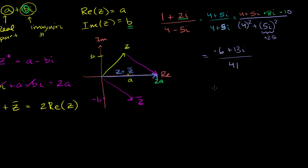So we can write this as a complex number. This is negative 6 over 41 plus 13 over 41i. We were able to divide these two complex numbers.